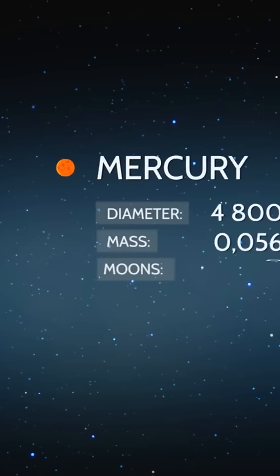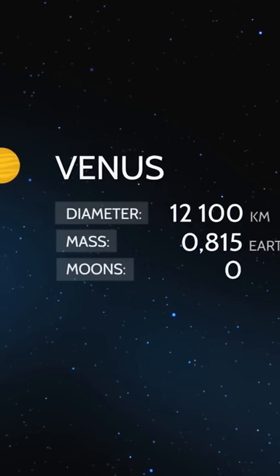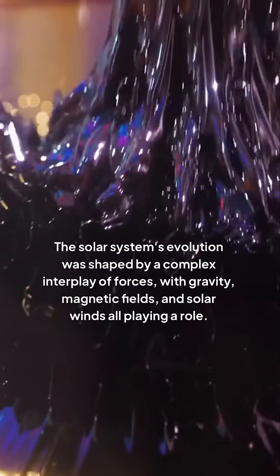The planets began to take shape, with the rocky planets forming near the sun and the gas giants forming farther out.